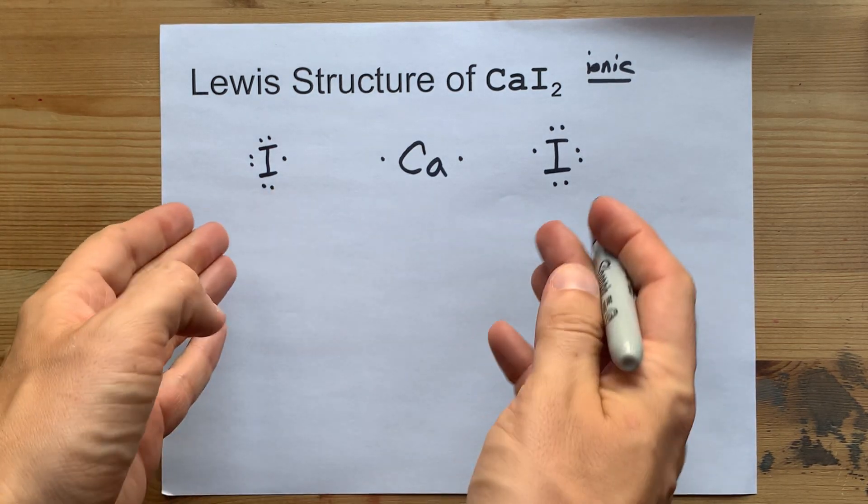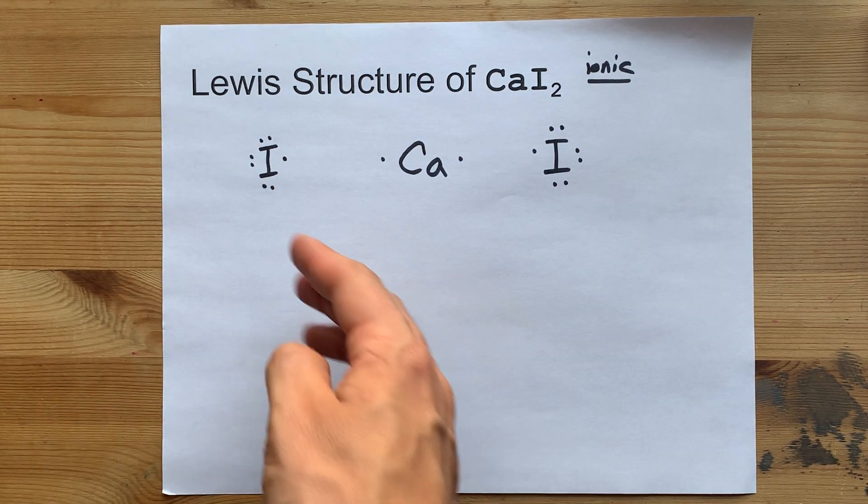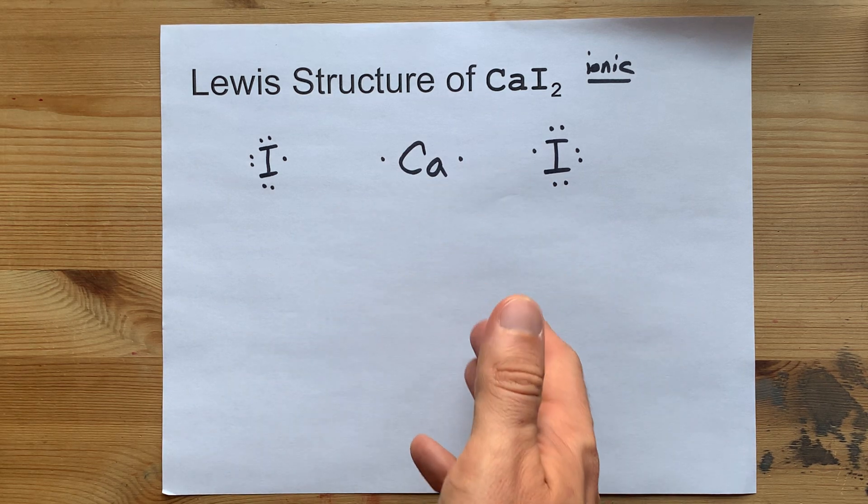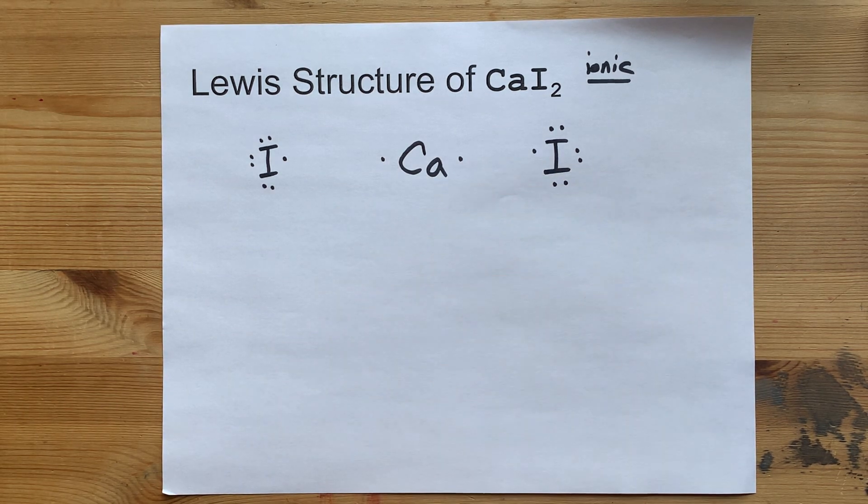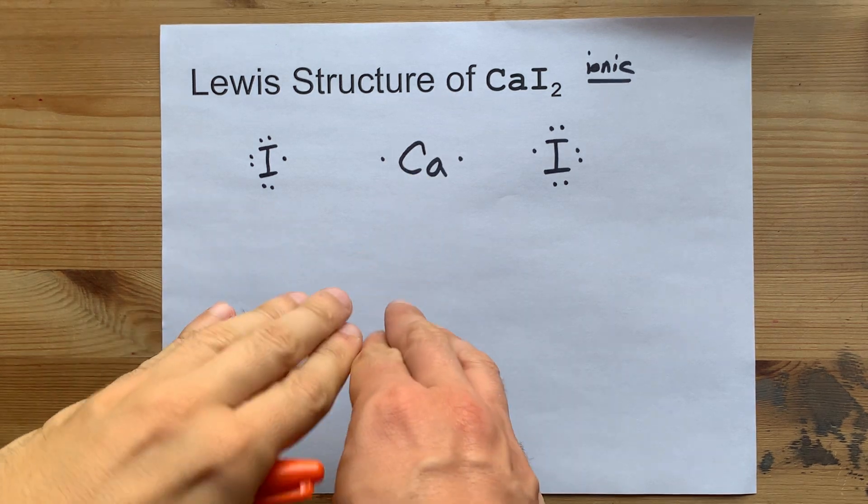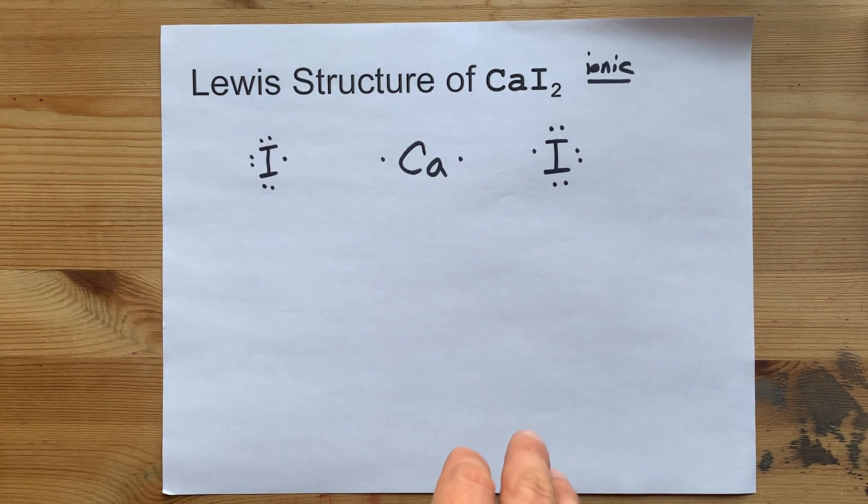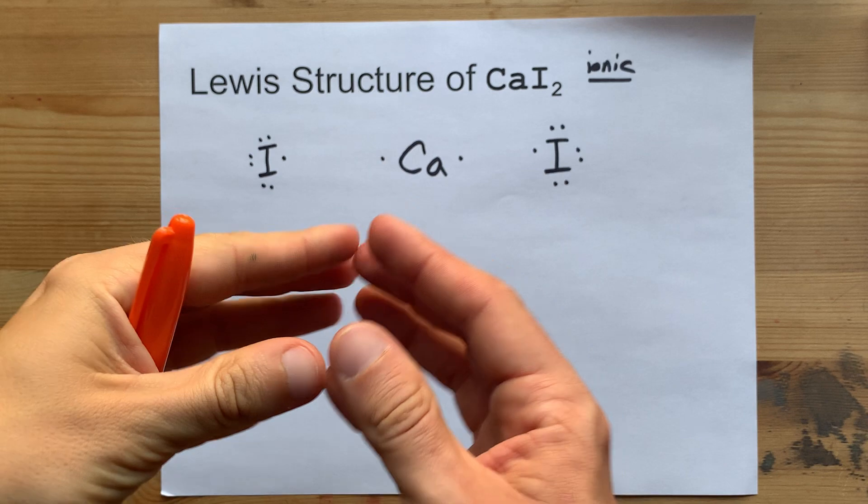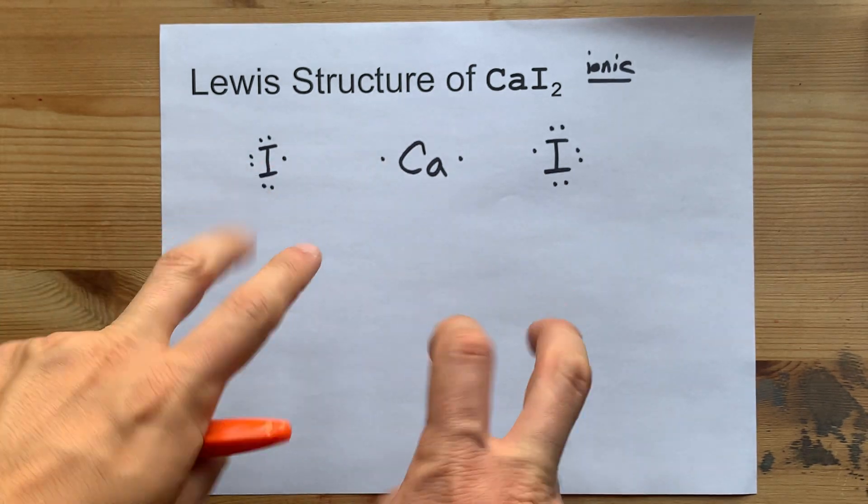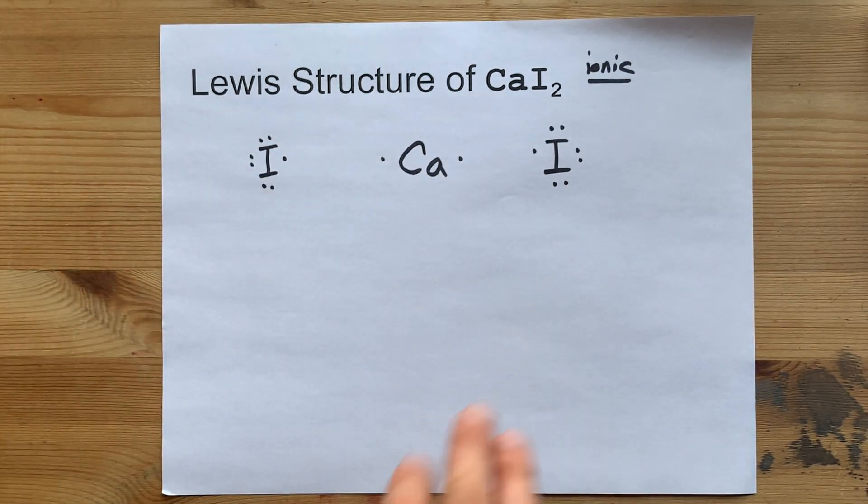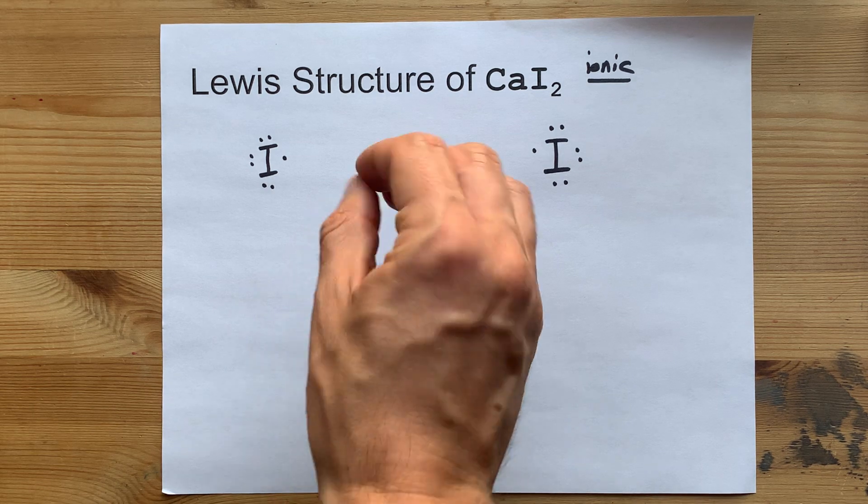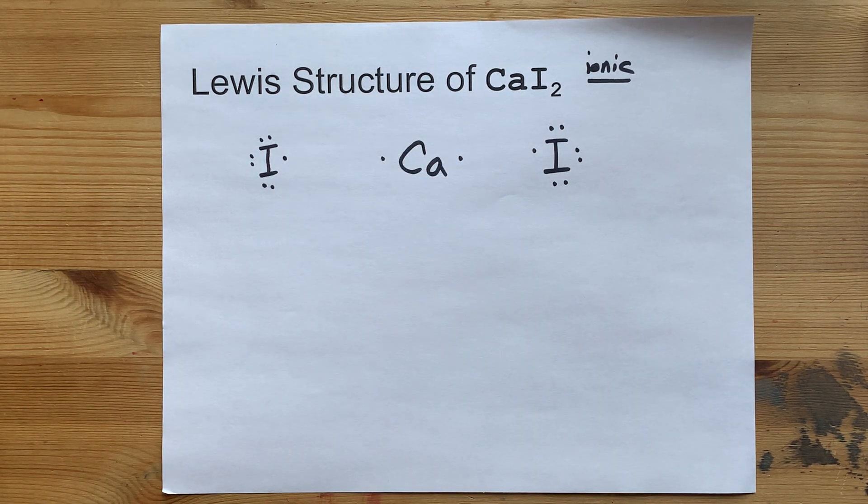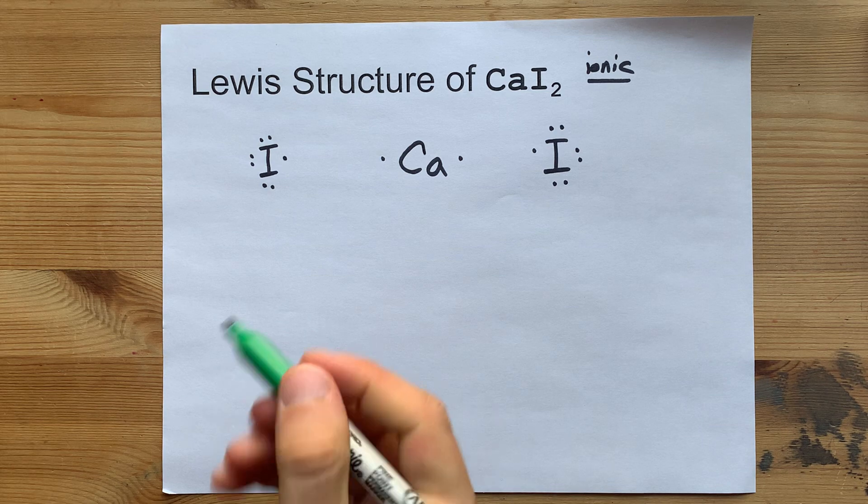Now, in order to make these stable, they either want to have eight electrons around them each. That would satisfy the octet rule. Or, in the case of calcium, if it can give away all of its electrons, then its outer shell is now empty, and the new outer shell is the one below it, which is full. The point is, the metal is going to give away its electrons, and the non-metals are going to accept them.